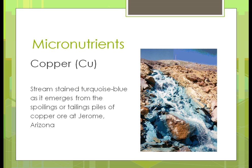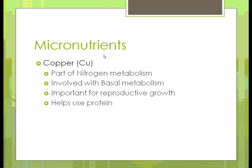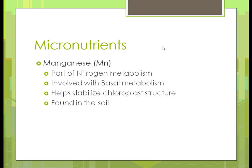Here's a picture of a turquoise-blue stream caused by a copper mine that wasn't properly closed down — a pretty color but not good for the environment. Copper is used for nitrogen metabolism and cell development in basal metabolism. It's very important for reproductive growth, and also helps use the protein in sugars. Manganese is also part of nitrogen metabolism and cell metabolism. It helps stabilize the plant's structure and is found naturally in the soil.